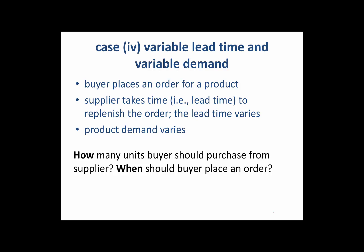This is Case 4, and the most realistic of all cases — because both the demand and the lead time are uncertain. Since both are uncertain, both can be characterized using probabilistic measures such as average and standard deviation. For instance, demand is characterized by average demand D-bar and standard deviation of demand Sigma-D; similarly, lead time is characterized by average lead time L-bar and standard deviation of lead time Sigma-LT.